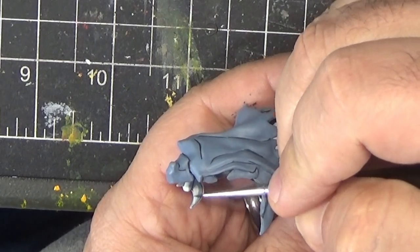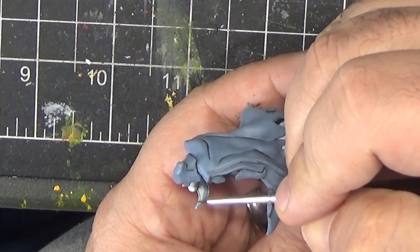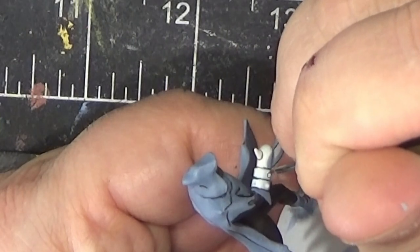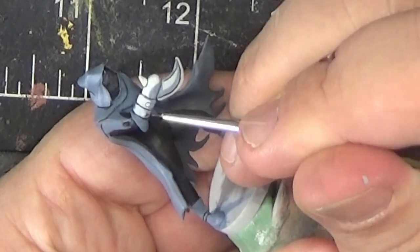And of course, we'll do the same thing on both sides. Finally, we'll draw a circle around each of the rivets on the side of the weapon.